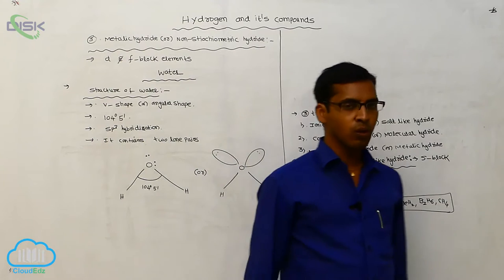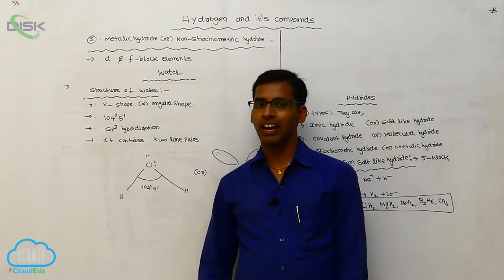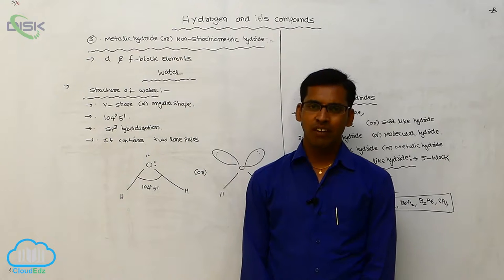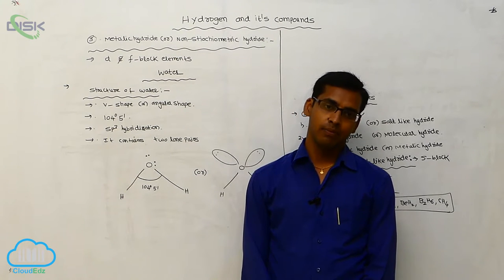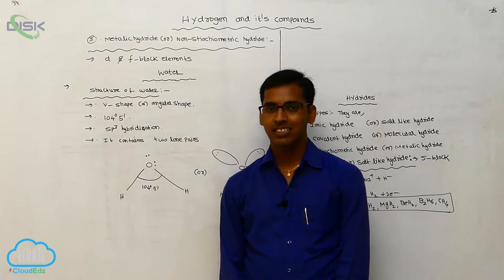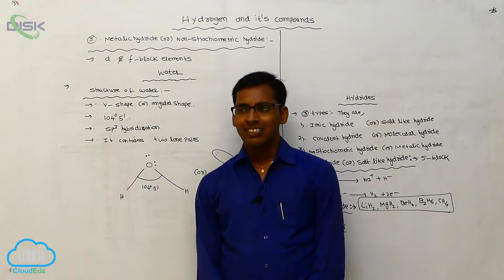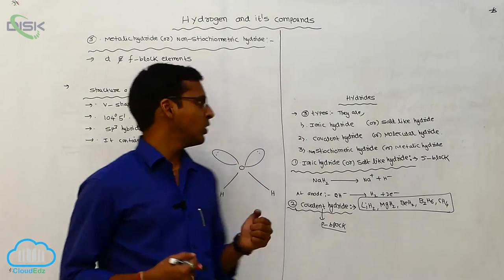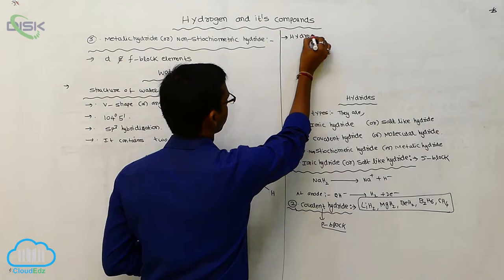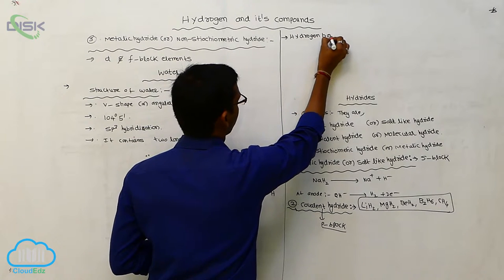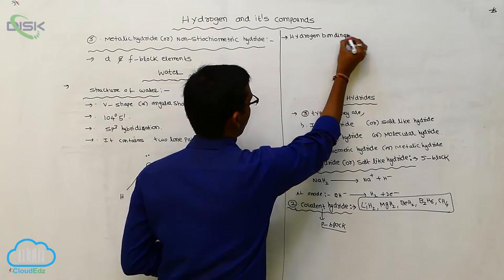Generally the water molecule boiling point is more than remaining hydrides. For example, H2O is having more boiling point compared to hydrogen sulfide, H2S, because generally the water molecule exhibits hydrogen bonding. It forms hydrogen bond. It involves in hydrogen bonding formation.